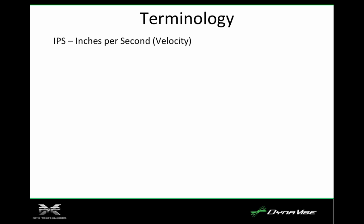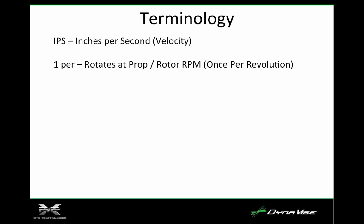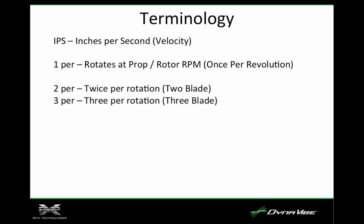Something else we're going to talk about are the per ratios. A one-per vibration means that vibration occurs once per prop rotation. A two-per vibration is something that occurs twice per rotation. You can also have a three-per if somebody has a three-bladed propeller, which means there's something occurring three times per rotation.